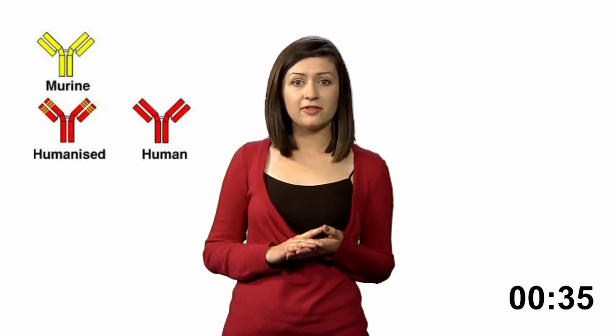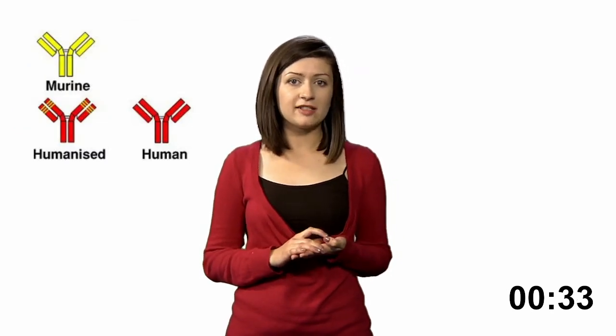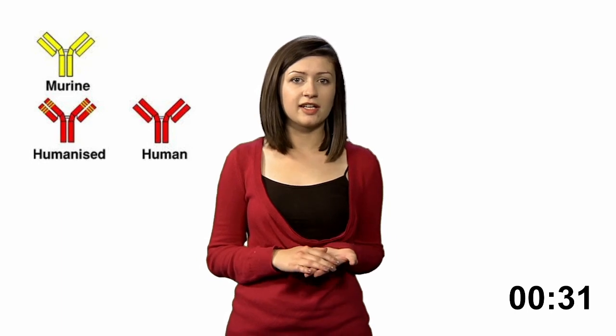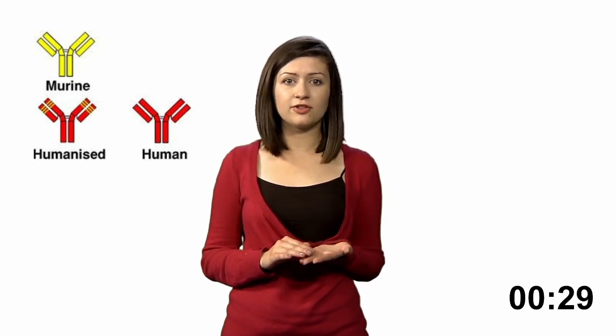The monoclonal antibodies are produced by injecting mice with a protein from the Ebola virus. The mice then produce antibodies that recognize and bind the Ebola protein. The mouse antibodies need to be modified in a way that they resemble human antibodies to avoid an immune reaction against the antibodies, a process called humanization.